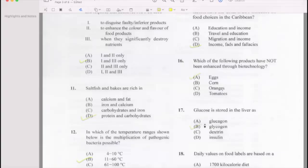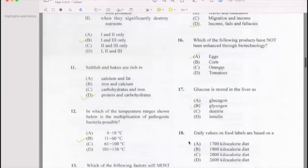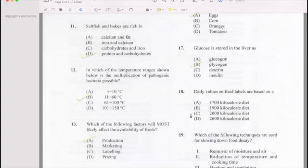Number 18: Daily intake of food labels are based on what? 2,000 kilocalories, C.